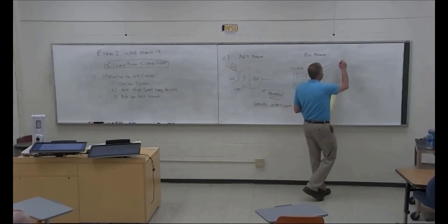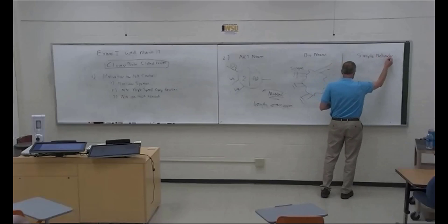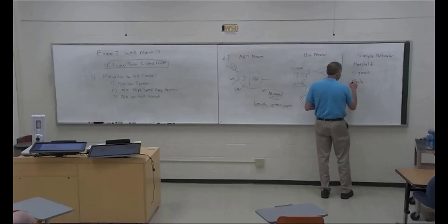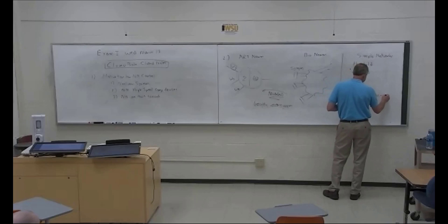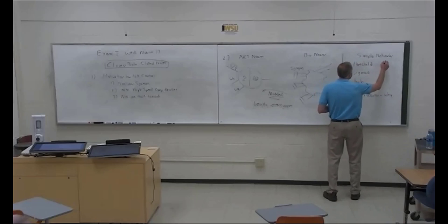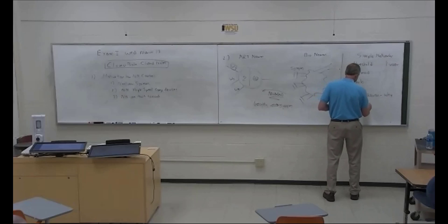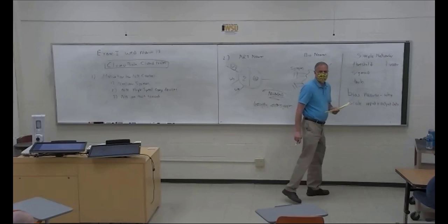We took artificial neurons and turned them into simple networks. Make sure you know how to do threshold activation functions — sigmoid and tanh. Know how to process those and what they are, why there's a bias neuron, and why we scale input and output data. Go back and review that so you can understand it.